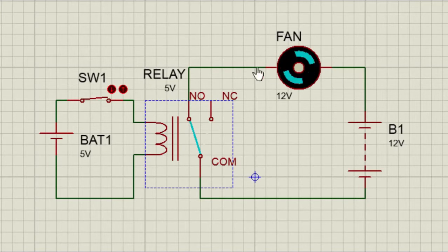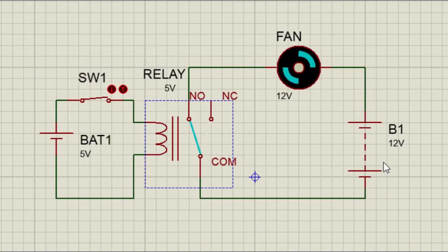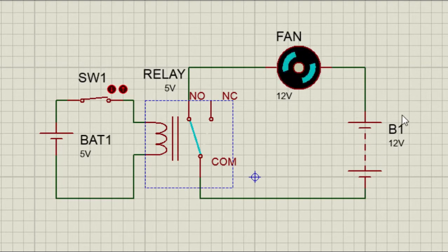This in turn closes the high-power section of the circuit. The high-power section could be anything depending on the application — it could be 12 volts or it could be 220 volt AC, depending on the contact rating of the relay.